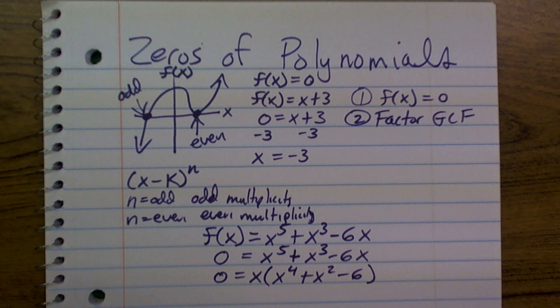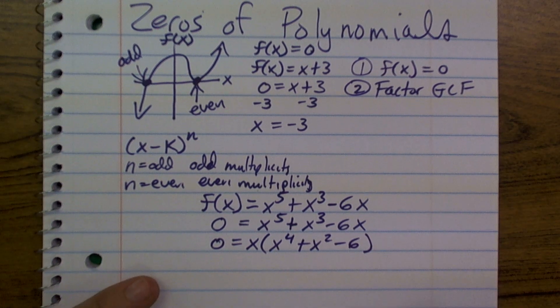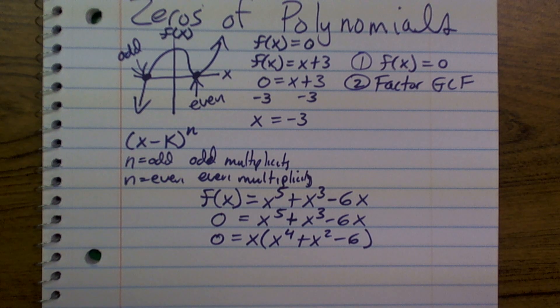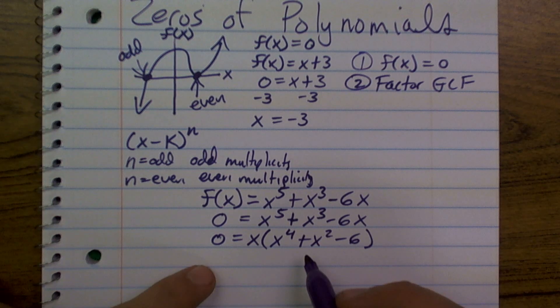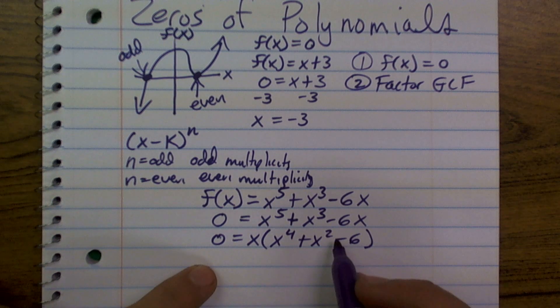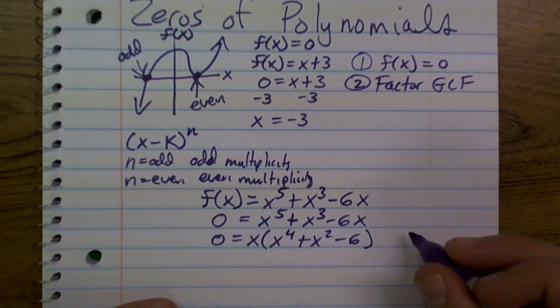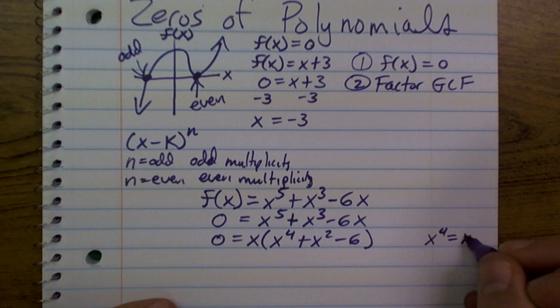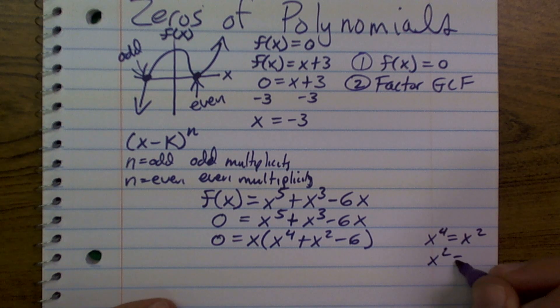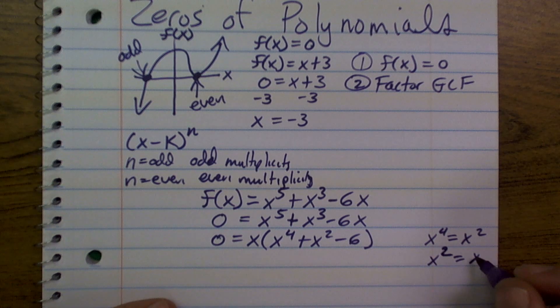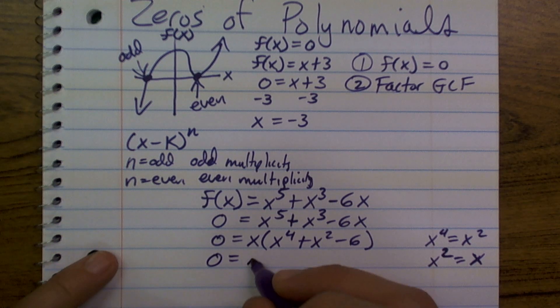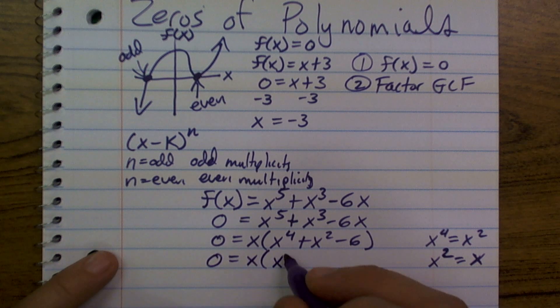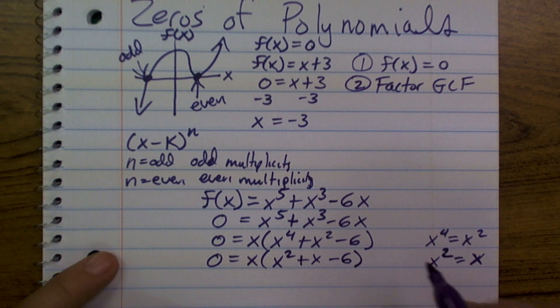Now, in this problem, what we'll notice is we're going to use a factoring technique called substitution. And what the substitution method tells us is rather than dealing with x to the fourth and x squared, we don't really like factoring this trinomial with x to the fourth and x squared. What I'm going to choose to do is I'm going to rather say let's let x to the fourth equal x squared and let x squared equal x. Therefore, now what I do is when I substitute in those values, I'm going to have something that's going to be much easier for me to work with. So, I have x times x squared plus x minus 6.